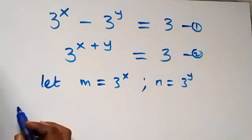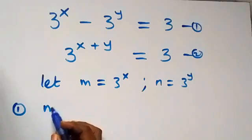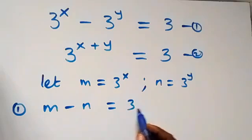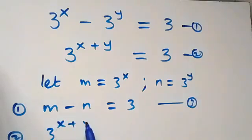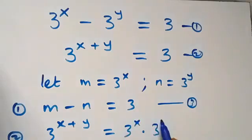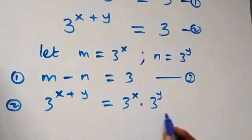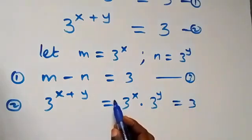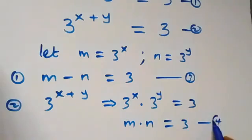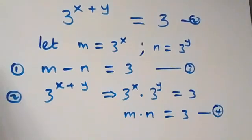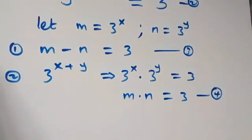From equation 1, we now have m minus n equals 3 — let this be equation 3. Also, from equation 2, we have 3 raised to power x plus y. From the law of indices, when we separate this we get 3 raised to power x times 3 raised to power y, which equals 3. This implies m times n equals 3 — let this be equation 4.